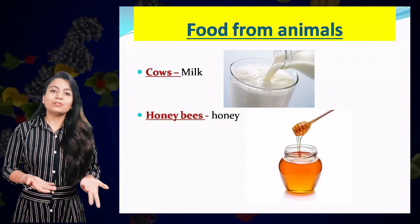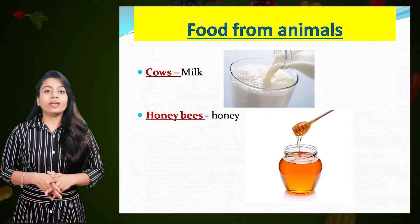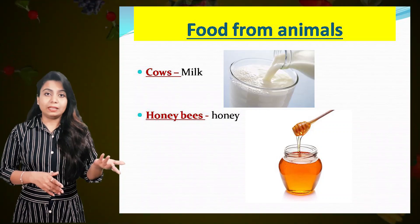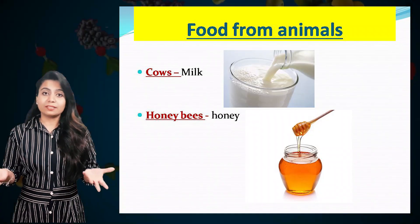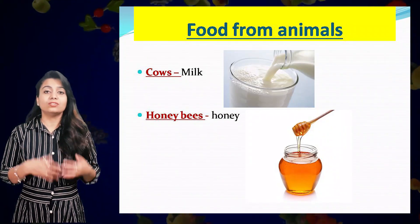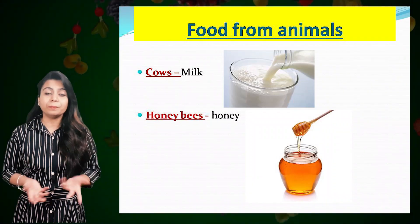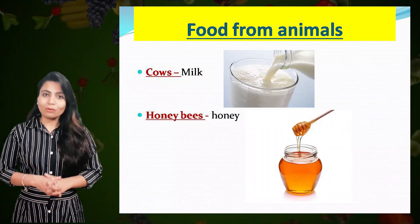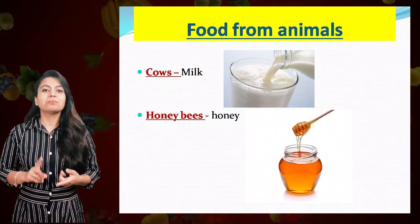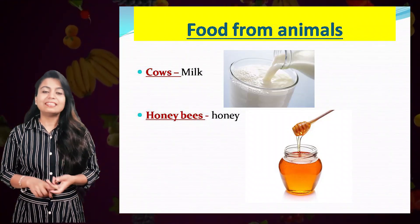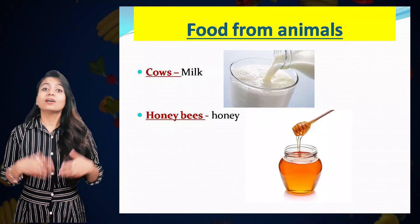Now coming to animals. From animals we get milk, and lots of milk products are made from that — such as butter, cheese, ghee, and cream. And from where do we get milk? We get milk from cows, buffaloes, yak, and goat.